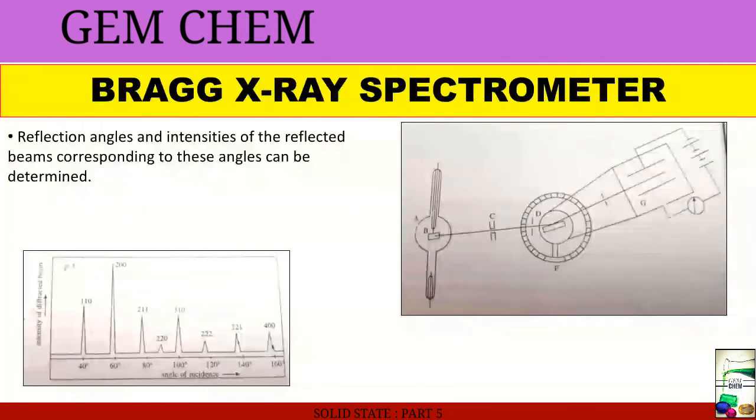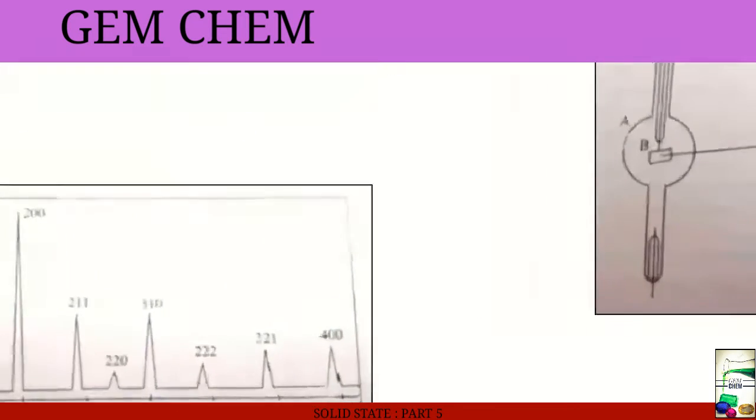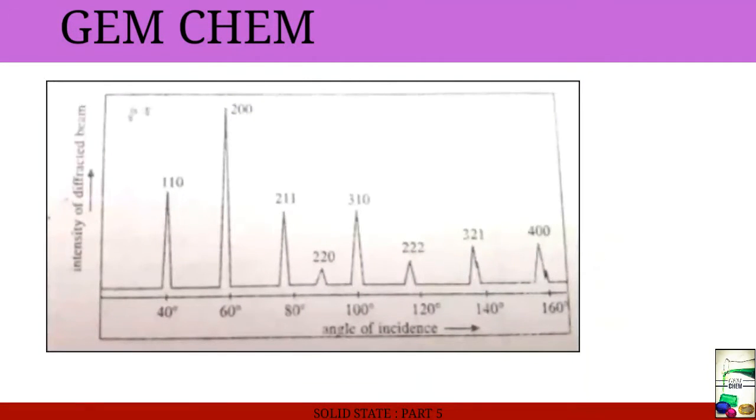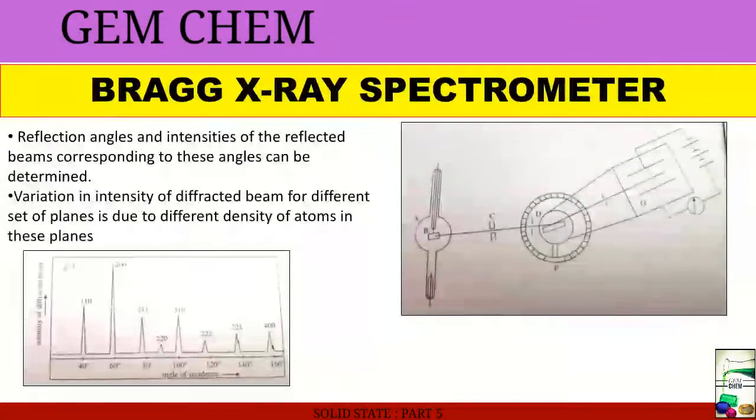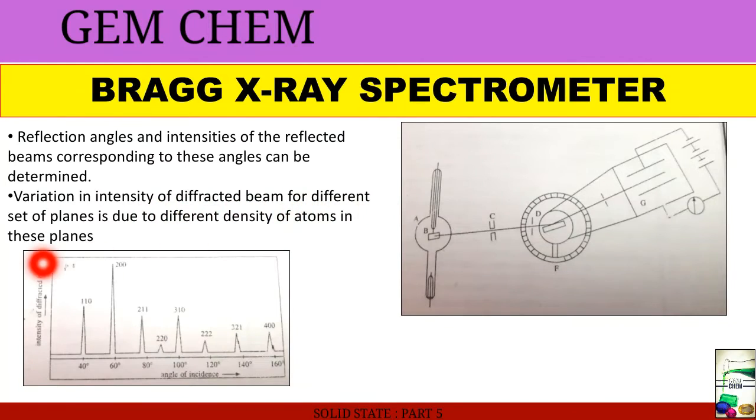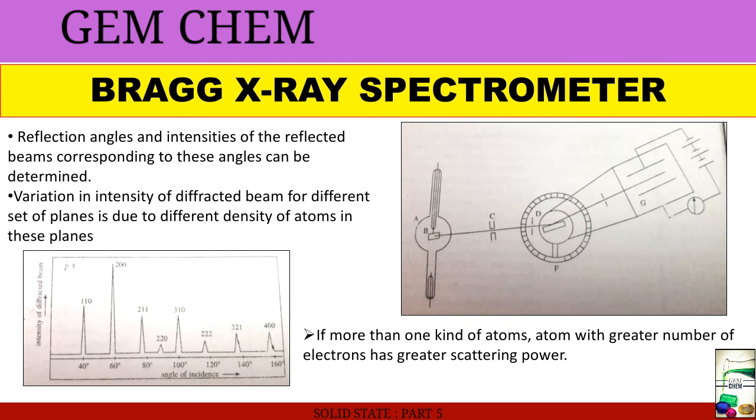Now we will see a spectrum of tungsten which is being obtained. This is the spectra. See here different peaks of different planes with different intensities. What we can conclude is that variation in intensity of diffracted beam for different set of planes is due to the different density of atoms in these planes. Since the planes densities are different, we are getting different kinds of intensity beams.